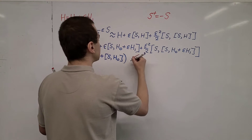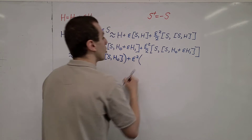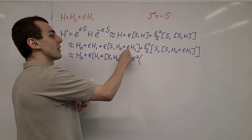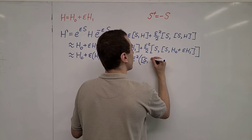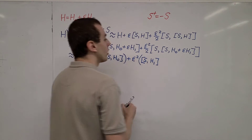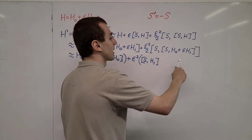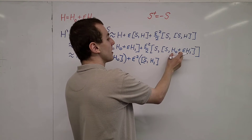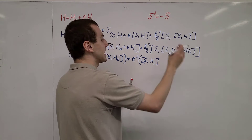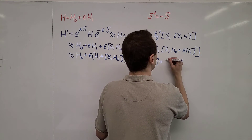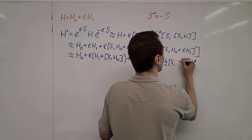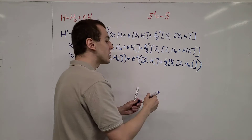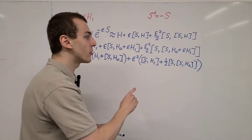Now let's look at the second order terms, those with epsilon squared. We have the commutator of S with H1, which carries a coefficient of epsilon squared. We also have contributions from the nested commutator term: epsilon squared times the commutator of S with the commutator of S with H0, giving us one half of that nested commutator. We don't have any more second order contributions, so we close the bracket here.